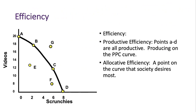For efficiency, to be efficient you're using your full production of resources. Any point from A, B, C, and D is what's referred to as productively efficient — we are using all of our resources to produce one of those four points on the PPC curve. Allocative efficiency is the point that society determines as the best point.